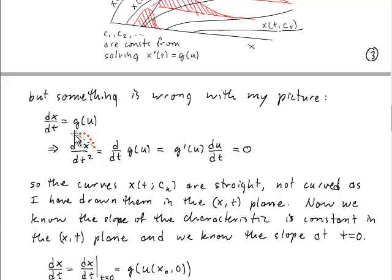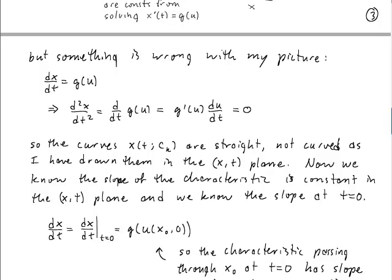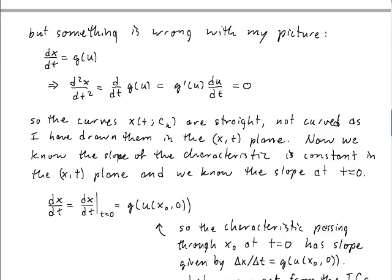So that says that the x versus t must be a straight line, to give me a second derivative that's zero. So the curves x of t, given some initial points along the x-axis, are straight. And now we know the nature of our curves, and we know that the initial slope, which is going to be maintained forever, until something catastrophic happens, that I'll tell you about soon, is going to be given by the value of the initial condition in the problem, okay? So dx/dt is dx/dt at the initial time, which is just g of u evaluated at the initial point, along the x-axis, and at the initial time, okay? So let's see if we can imagine what this construction looks like.